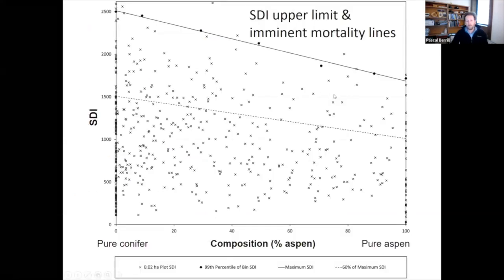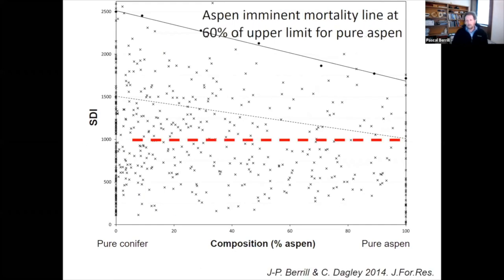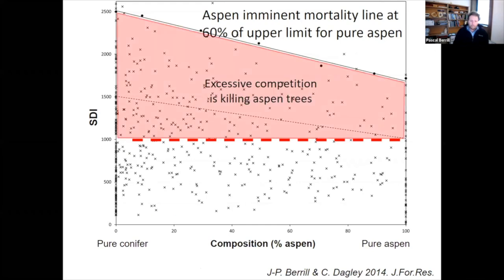We developed this graph to help us understand how crowded it is. Stand density index is on the y-axis and species composition on the x-axis. This red line represents 60% of the maximum stand density for aspen, and anything above 60% means we're expecting mortality to be imminent. Above the line you've got excessive competition for aspen; the conifer is still okay up there but the aspen is enduring competition.